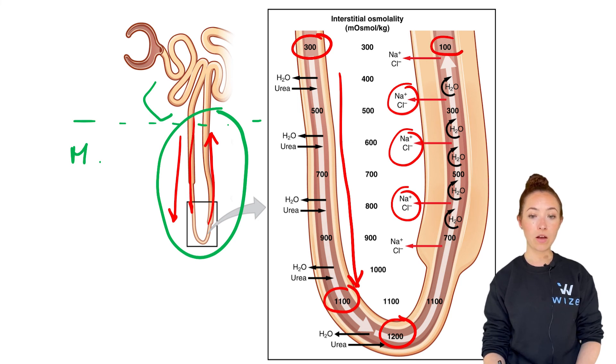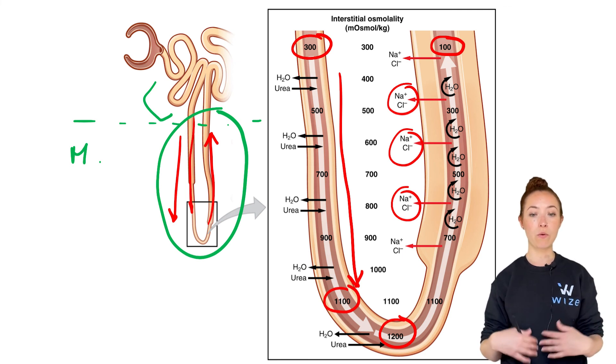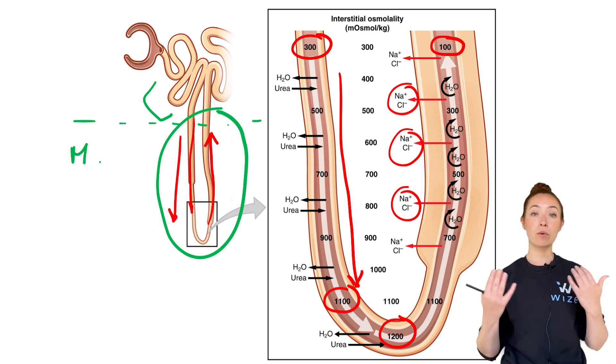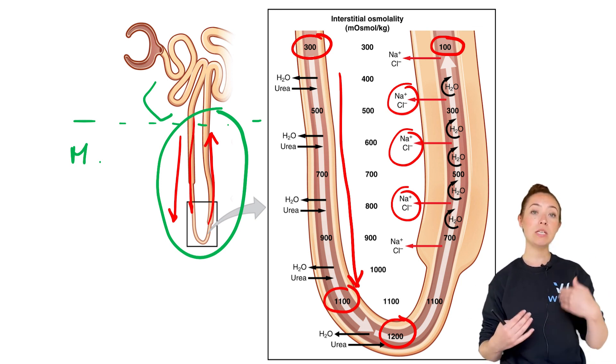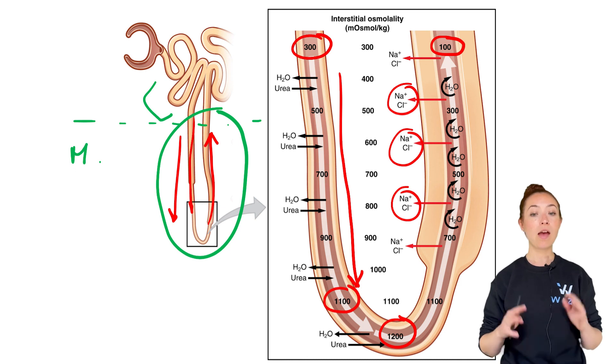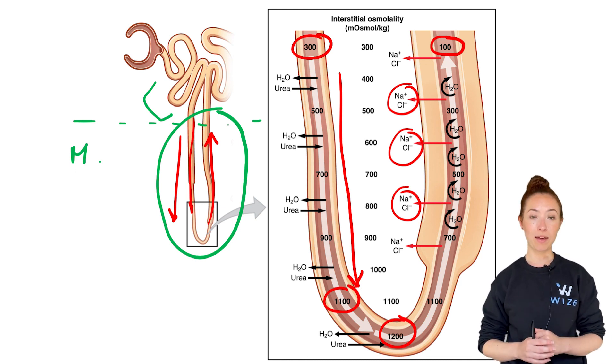Notice how by the time the filtrate exits the loop of Henle, the osmolarity is super low—even lower than it was before at 100 milliosmoles. Don't worry about necessarily memorizing all these numbers. Just have a sense for what's happening as the filtrate goes from the descending to the ascending loop of Henle, and keep in mind the concept of the counter current multiplier.